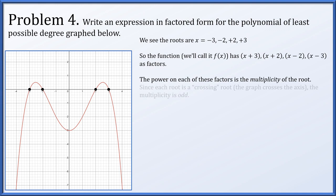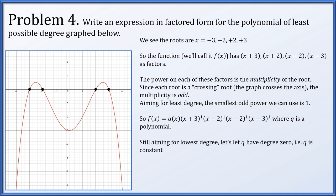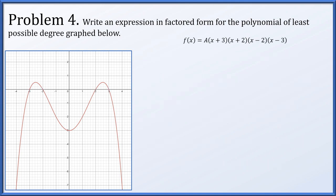The power on each factor is the multiplicity of the root. When multiplicity is odd, the graph crosses the axis. Aiming for least degree, we use first powers since the graph does cross at all four roots. So f(x) = q(x) · (x + 3)(x + 2)(x − 2)(x − 3), where q(x) is an unknown polynomial. For the smallest possible degree, q should be a constant, giving f(x) = a(x + 3)(x + 2)(x − 2)(x − 3).